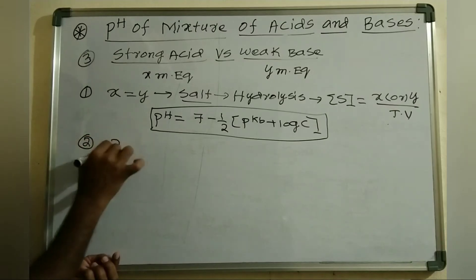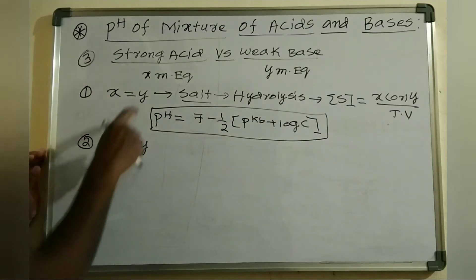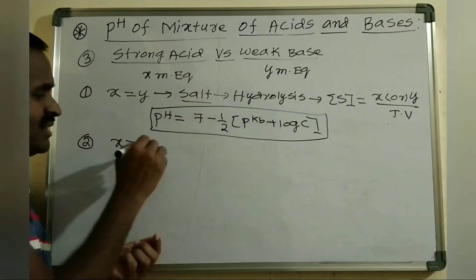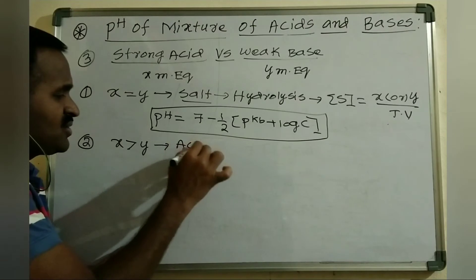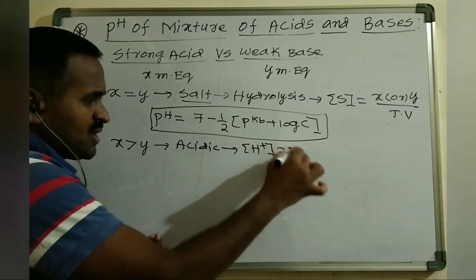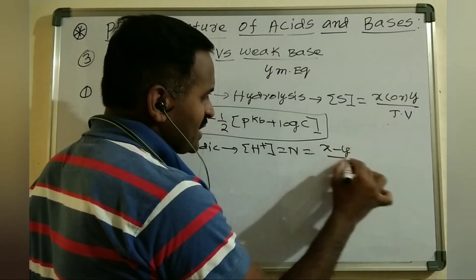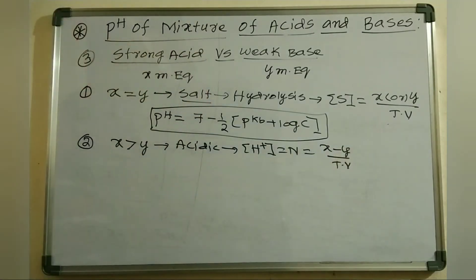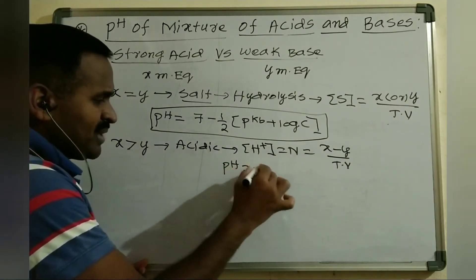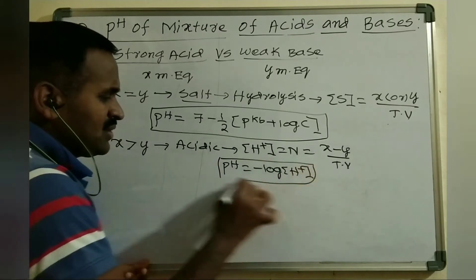Case 2: X greater than Y — milliequivalents of strong acid is more than milliequivalents of weak base. The resulting solution is acidic in nature. The H⁺ ion concentration equals (X minus Y) divided by the total volume of strong acid and weak base. From this, pH equals minus log of the H⁺ ion concentration.